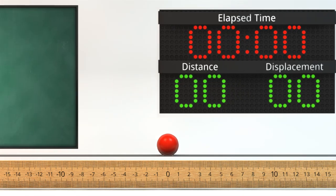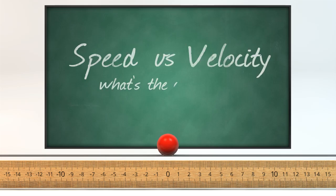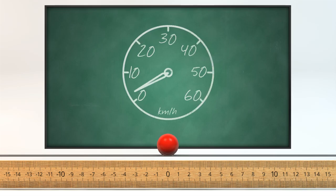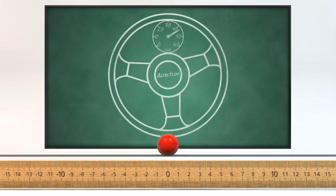In day to day life, you have probably heard people talk about the speed of an object, rather than its velocity. But what's the difference? Well speed is a scalar quantity, while velocity is a vector quantity. This means that speed only tells you how fast an object is going, but velocity tells you how fast the object is going and its direction of motion.